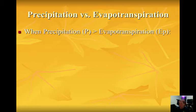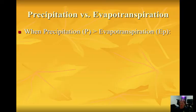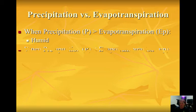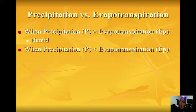Precipitation is anything that comes down as moisture from a cloud and lands on Earth's surface. Evapotranspiration is when moisture is put back into the atmosphere, whether by evaporation or by transpiration, which comes from trees or plants. If precipitation is greater than evapotranspiration — more coming down from the clouds than evaporating into the air — you have a humid climate. If you have less precipitation than evapotranspiration, you have more moisture being put into the atmosphere than coming down, which would be an arid climate.